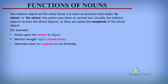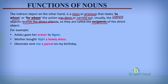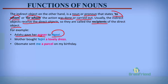The indirect object, on the other hand, is a noun or pronoun that states to whom or for whom the action was done or carried out. Usually, the indirect object receives the direct object, so they are called the recipients of the direct object. Adaku gave her eraser to Ngozi — Adaku gave her eraser to whom? To Ngozi. So Ngozi is the indirect object of this sentence.